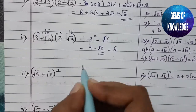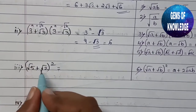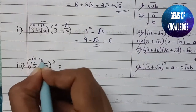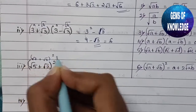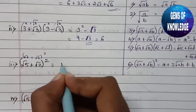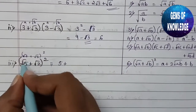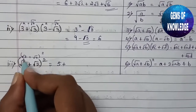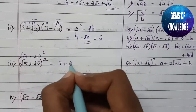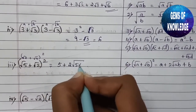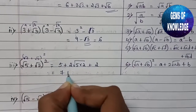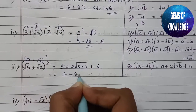The third expression is (root 5 + root 2)², which fits the formula (root a + root b)² = a + 2 root(ab) + b. Here a = 5 and b = 2, so the answer is 5 + 2 root(10) + 2, which equals 7 + 2 root 10.